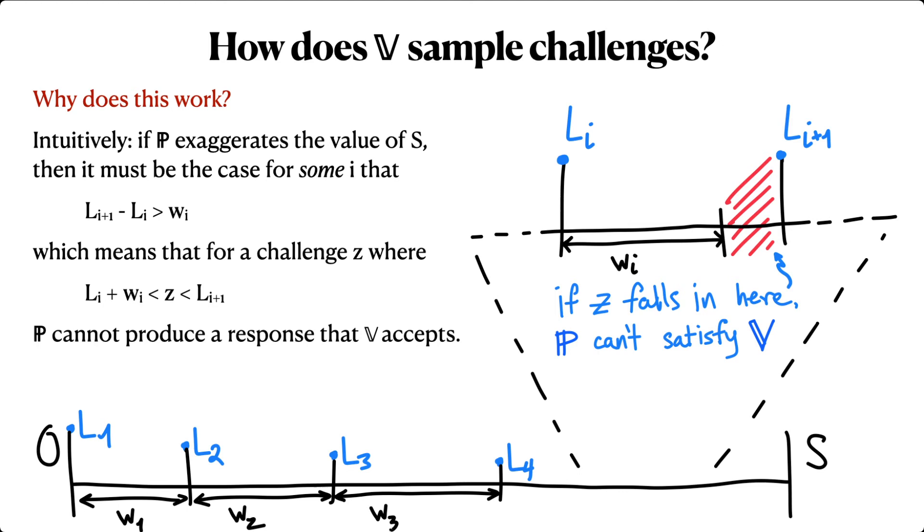So in sum, if the prover is dishonest about any of the sub-ranges, then with a sufficient number of queries, the verifier will detect and reject.